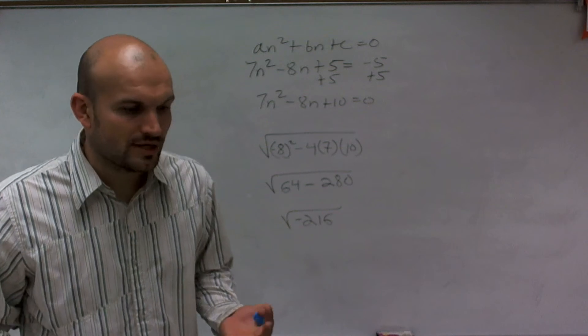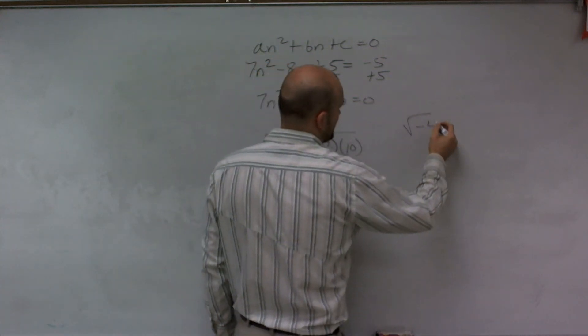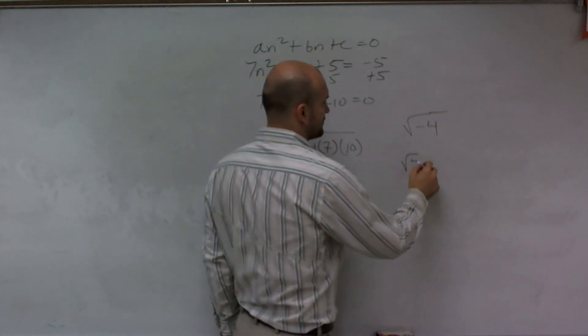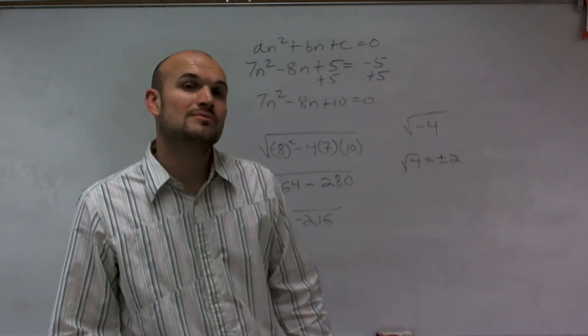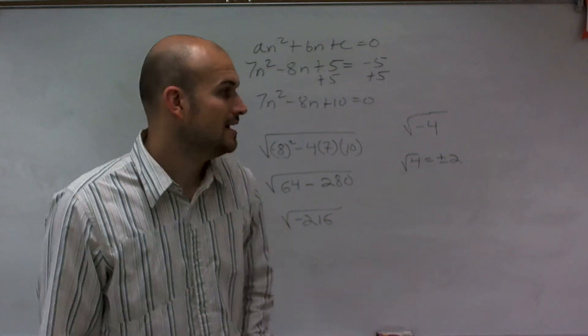So what is that going to tell us? Well, we know we can't take the square root of a negative number. Let me just show you. Let's take the square root of negative 4. We know that the square root of 4 is equal to plus or minus 2 because 2 times 2 is 4 and negative 2 times negative 2 is 4. However, there's no two numbers that are exactly the same that you can multiply to give you negative 4.